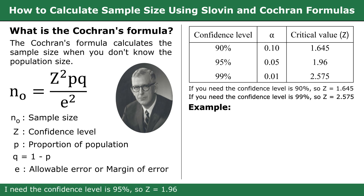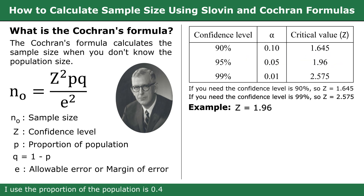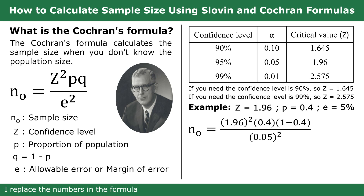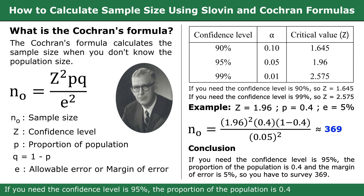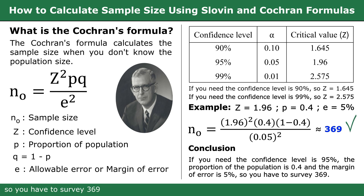Example: I need the confidence level to be 95%, so Z equals 1.96. I need the proportion of the population to be 0.4, and I use a margin of error of 5%. I substitute the numbers into the formula, so the sample size is 368.79, approximately 369. Conclusion: if you need the confidence level to be 95%, the proportion of the population is 0.4, and the margin of error is 5%, so you have to survey 369.